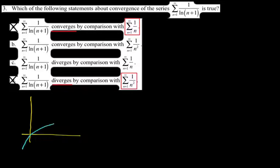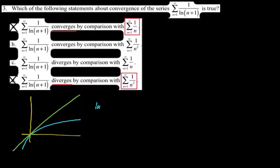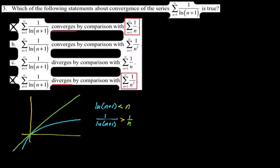I'll graph ln(n+1) and n. For n ≥ 1, n is above ln(n+1), so ln(n+1) < n. Taking reciprocals flips the inequality: 1/ln(n+1) > 1/n. Since 1/n diverges, 1/ln(n+1) also diverges. The answer is C. It's really helpful to go in with a gut instinct on convergence or divergence — I wouldn't have done all this work; I would have just picked C and moved on. That comes with practice.